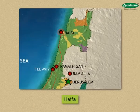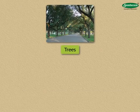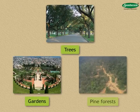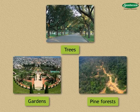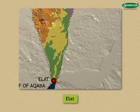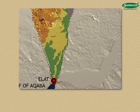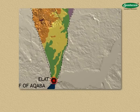Haifa is situated on the slope of Mount Carmel on the coast of the Mediterranean Sea. The streets in the city are lined with trees, gardens, and pine forests on both sides. This is the main port abounding in natural beauty. Eilat is the only port on the Gulf of Aqaba to the south, and trade with countries in the region of the Indian Ocean has become easier because of this port.